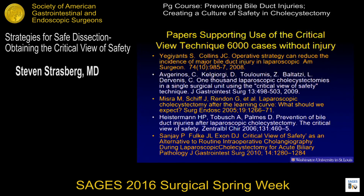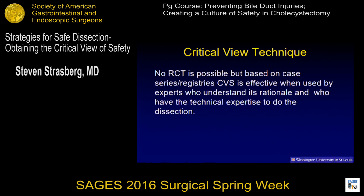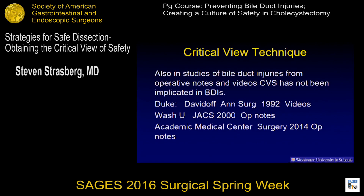So what's the evidence that the critical view of safety works? There are papers amounting to 6,000 cases in the literature, which would expect around 25 bile duct injuries in laparoscopic cholecystectomy without a bile duct injury due to misidentification. Although no randomized controlled trial is possible, based on case series registries, the critical view of safety is effective when used by experts who understand its rationale and have the technical expertise. The other evidence is that in studies of bile duct injuries from operative notes and videos, the critical view of safety has not been implicated in bile duct injuries. This may be the best proof — in the papers by David Odd and Brannum from Duke, who had videos showing how bile duct injuries occur, they didn't occur when people were doing the critical view of safety.